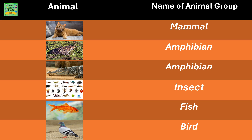The animals are matched with their animal group. The first picture is of a cat, which is a mammal. Next is a toad, which is an amphibian. A crocodile is also listed as an amphibian since they can survive on land as well as water. The next groups shown are insect, fish, and finally bird.